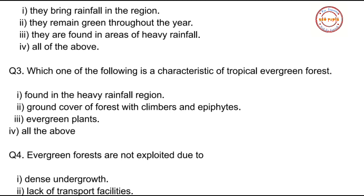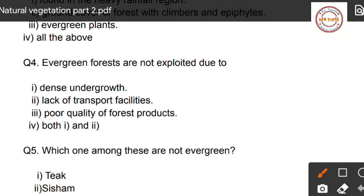Question number three: Which one of the following is a characteristic of tropical evergreen forest? First option: found in heavy rainfall regions; second option: ground cover of forest with climbers and epiphytes; third option: evergreen plants; fourth option: all the above. Since options one, two, and three are all characteristics of tropical evergreen forest, the correct answer is option four — all the above.